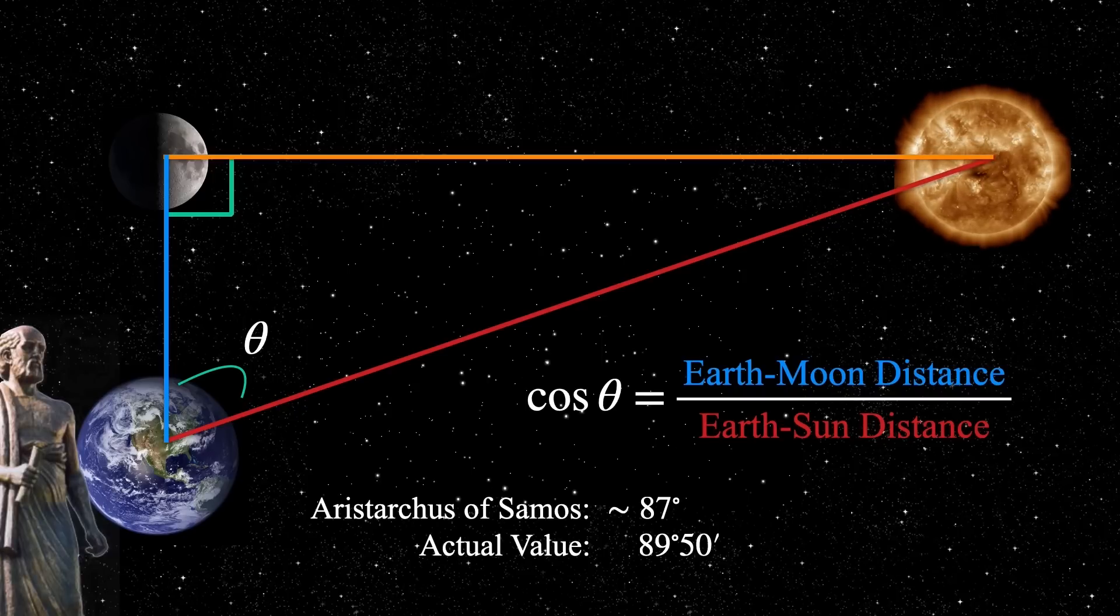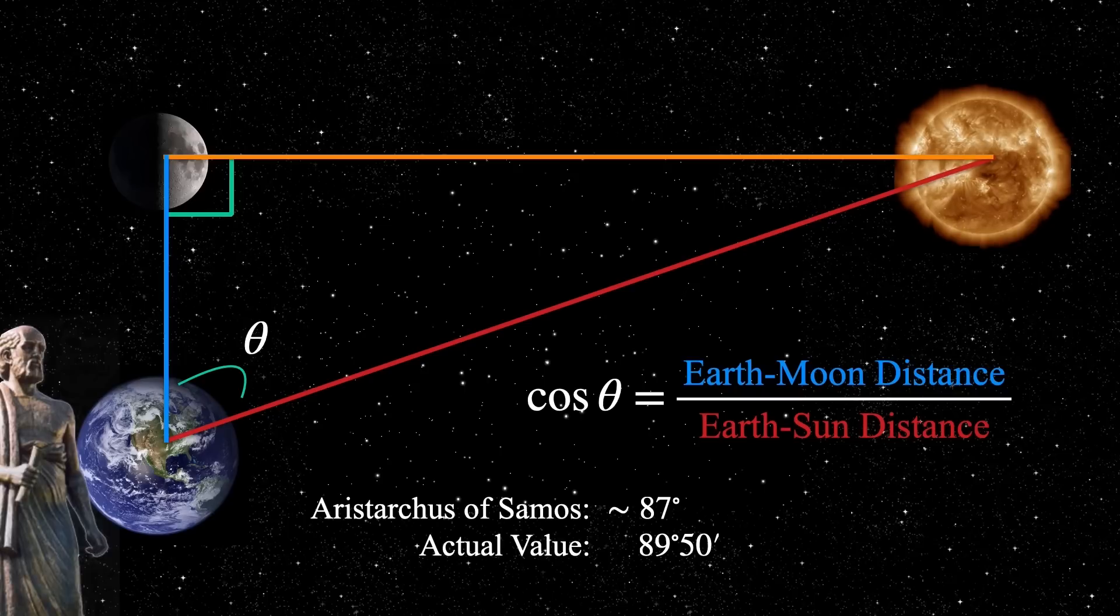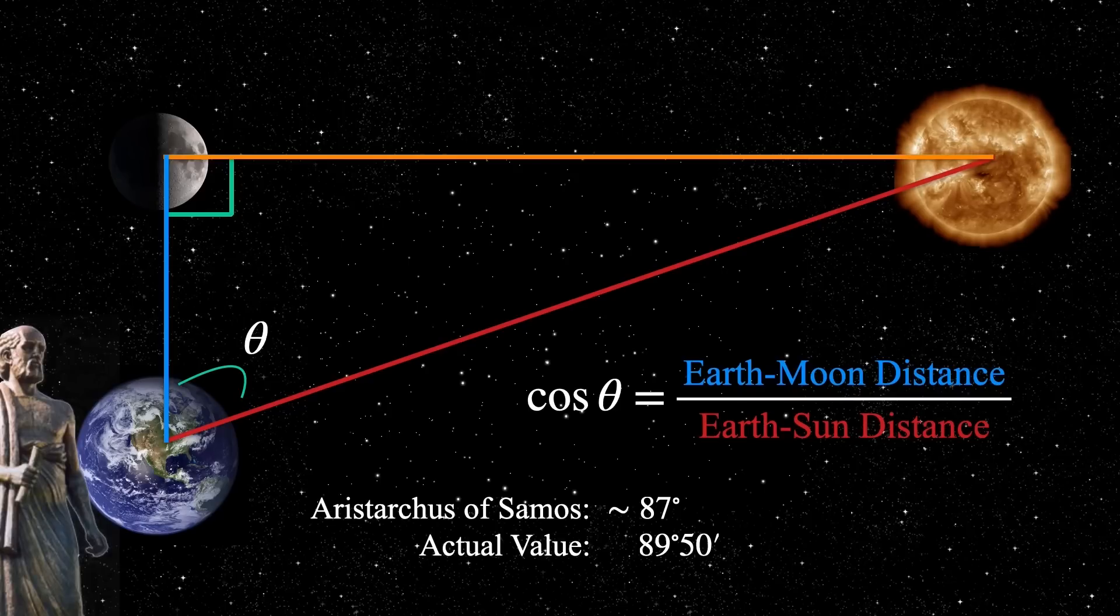And so we can use trigonometry, the cosine of the angle, to get the relative distances between the earth and the sun. What he measured in the sky, roughly speaking, about 87 degrees. That's a pretty good measurement. It's not 90 degrees. It's about 87 degrees.